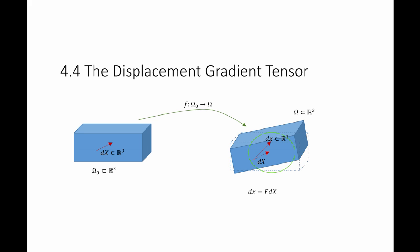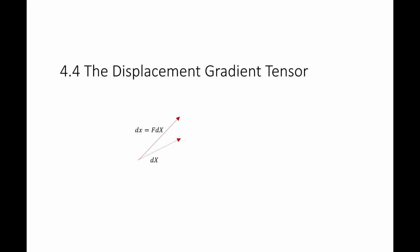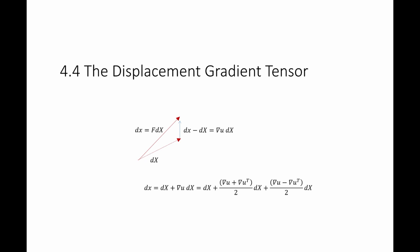Looking closely at vectors dX and dx: dX before deformation becomes dx after deformation, where dx equals F times dX. The difference between those two vectors — dx minus dX — equals F·dX minus dX, which equals (F minus I)·dX. The quantity F minus I is what I call the displacement gradient tensor, denoted gradient of u. So dx equals dX plus the gradient of u multiplied by dX.